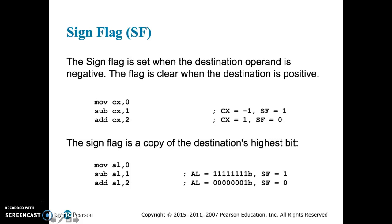And the sign flag is essentially a copy of the destination's highest bit. Remember, for signed integers, the highest bit, if it's a 1, means it's negative. If it's a 0, it means it's positive.